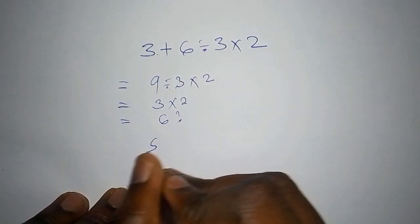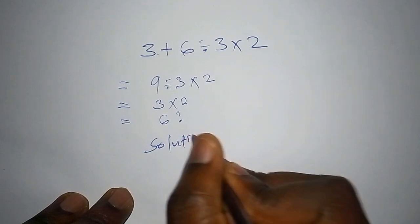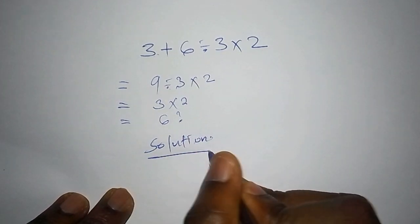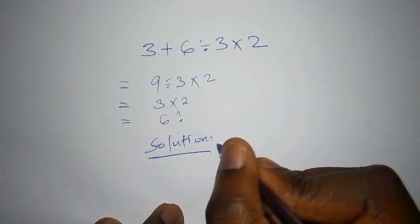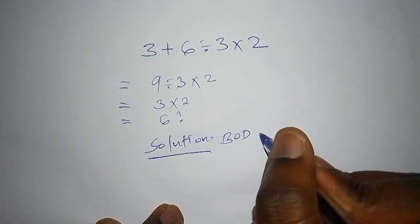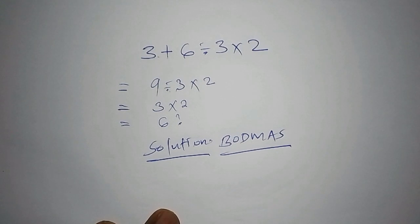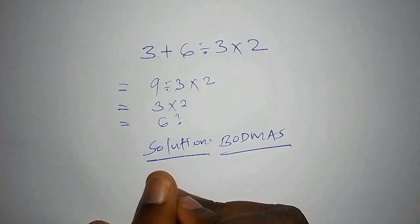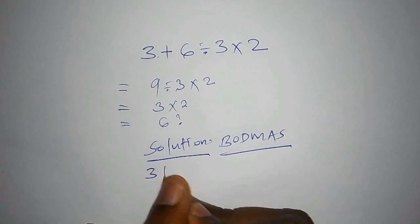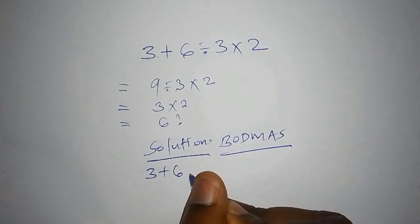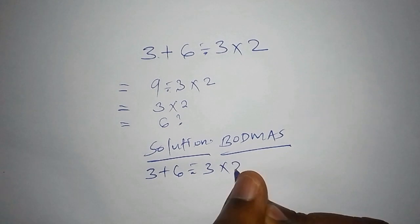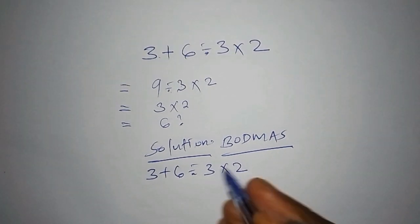So here, let us begin with the solution to this problem. Under the solution, we're going to look at what is called BODMAS. BODMAS is an order of operations that tells us how we shall follow the correct method or formula in working out this math problem. So let us now write the problem: we have 3 add to 6 divide by 3 multiply by 2.